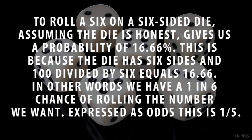To roll a 6 on a 6-sided dice, assuming the dice is honest, gives us a probability of 16.66%. This is because the dice has 6 sides and 100 divided by 6 equals 16.66. In other words, we have a 1 in 6 chance of rolling the number we want. When expressing it as odds, this is 5 over 1.